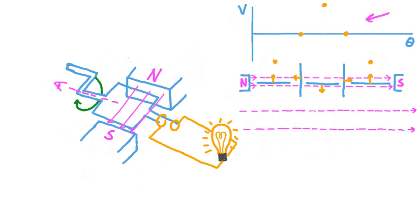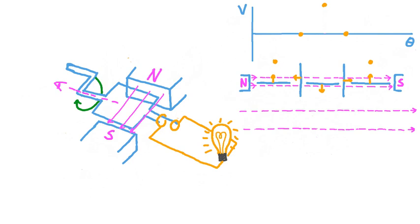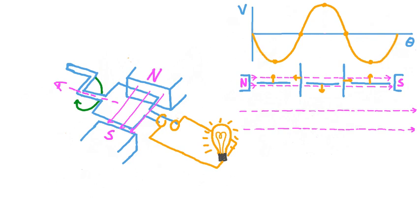Now that we have all these data points for the voltage induced in our loop at certain orientations, let's connect them with a line of best fit. It's very important to know that the line of best fit will be a sinusoidal curve — that means it will have a sine shape. This curve lets us figure out the voltage induced for any angular orientation between 0 and 360 degrees. This graph covers a single rotation, but of course the coil keeps going as the hand crank is turned, so this sine curve extends out to the right and left continuously.